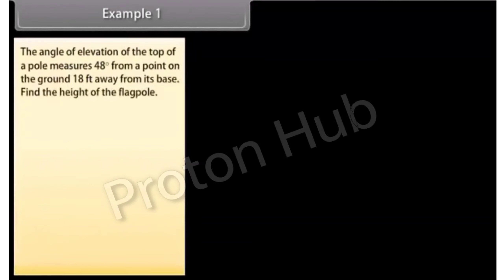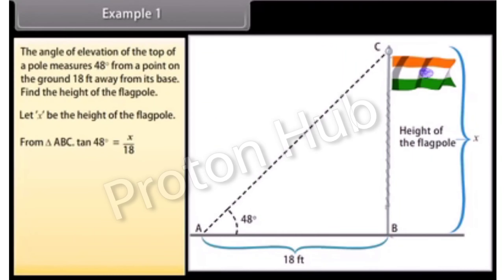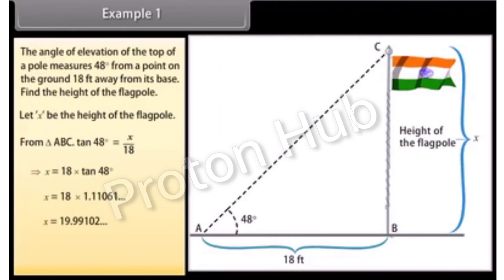Example 1: Let us solve some examples to understand better about angle of elevation and depression. The angle of elevation of the top of a pole measures 48 degrees from a point on the ground 18 feet away from its base. Find the height of the flagpole. Let X be the height of the flagpole. From triangle ABC, tan 48° = X/18, which implies X = 18 × tan 48° = 18 × 1.11061 = 19.991 ≈ 20. So the flagpole is about 20 feet high.